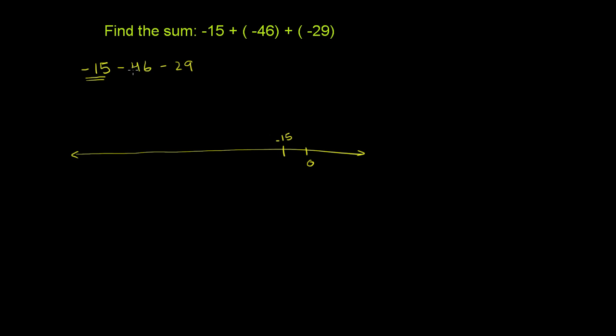And from that, we're going to subtract 46. So we're going to move 46 to the left. So this is going to be negative 15 minus 46. And then from this number, we're going to subtract 29, and we'll get us over here. So this is negative 15 minus 46 minus 29.